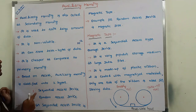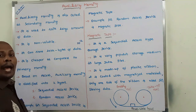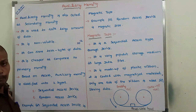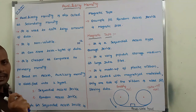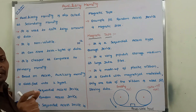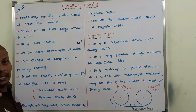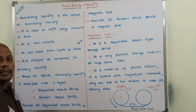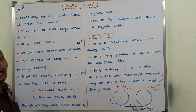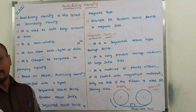That is the difference between sequential access device and random access device. The example for sequential access device is magnetic tape — data can be accessed from magnetic tape sequentially, not randomly. The examples for random access device are magnetic disc and optical disc.